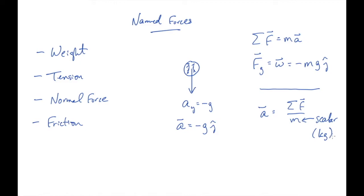Now we can talk about units of force. If mass is measured in kilograms and acceleration in meters per second squared, then forces have units of kilogram·meter per second squared. We combine those units and call that a newton — capital N. A newton is one kilogram·meter per second squared. It's the force required to accelerate one kilogram at one meter per second squared.